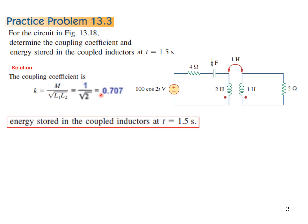This is the formula for the coupling coefficient. We just plug in the values: M is 1, L1 and L2 are 2 and 1, so its value is 0.707.